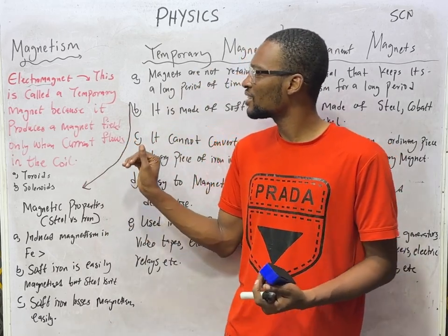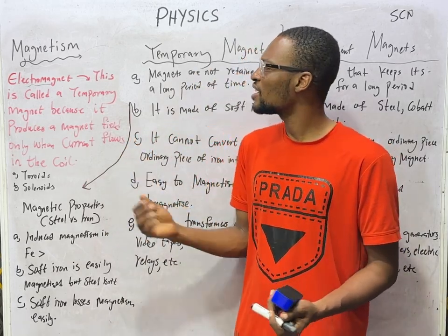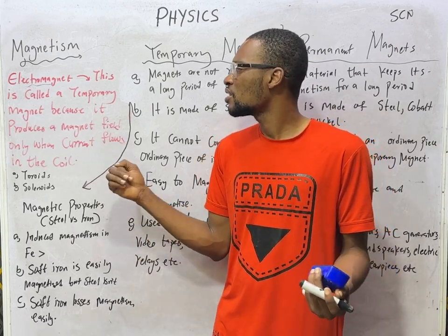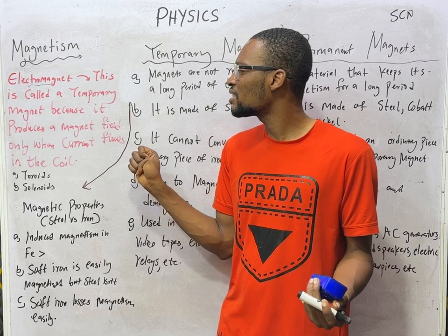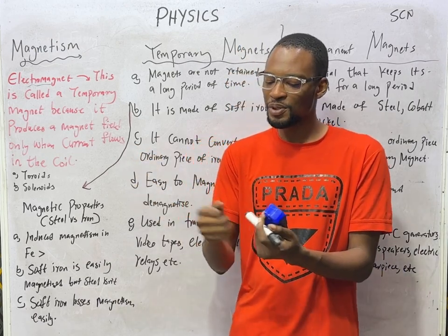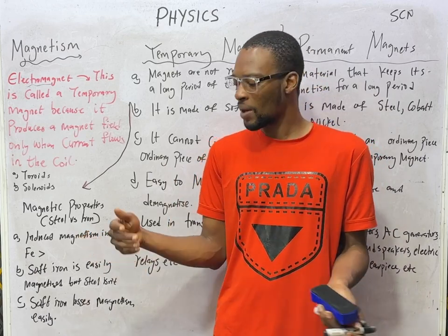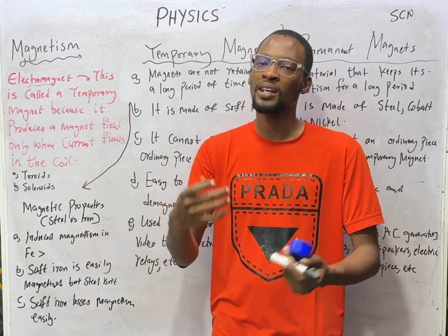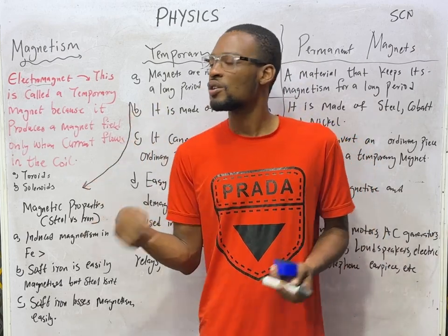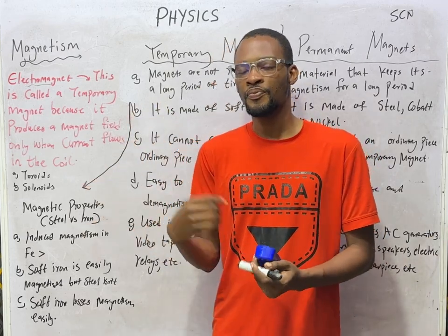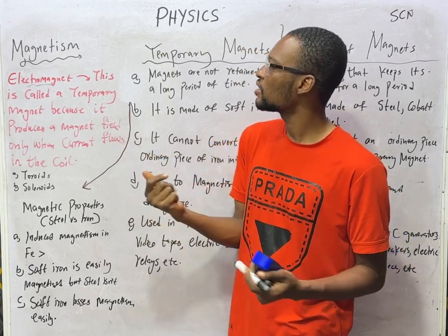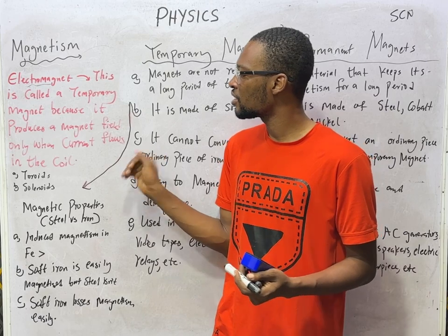There is something important called electromagnets. Electromagnets are referred to as temporary magnets because they produce a magnetic field only when current flows in the coil. If there is no current in the coil, it is not a magnet. By the time current flows in the coil of wire, it becomes a magnet. Electromagnets require current to produce a magnetic field; when the current is removed, there is no magnetic field. This is why they are also referred to as temporary magnets.